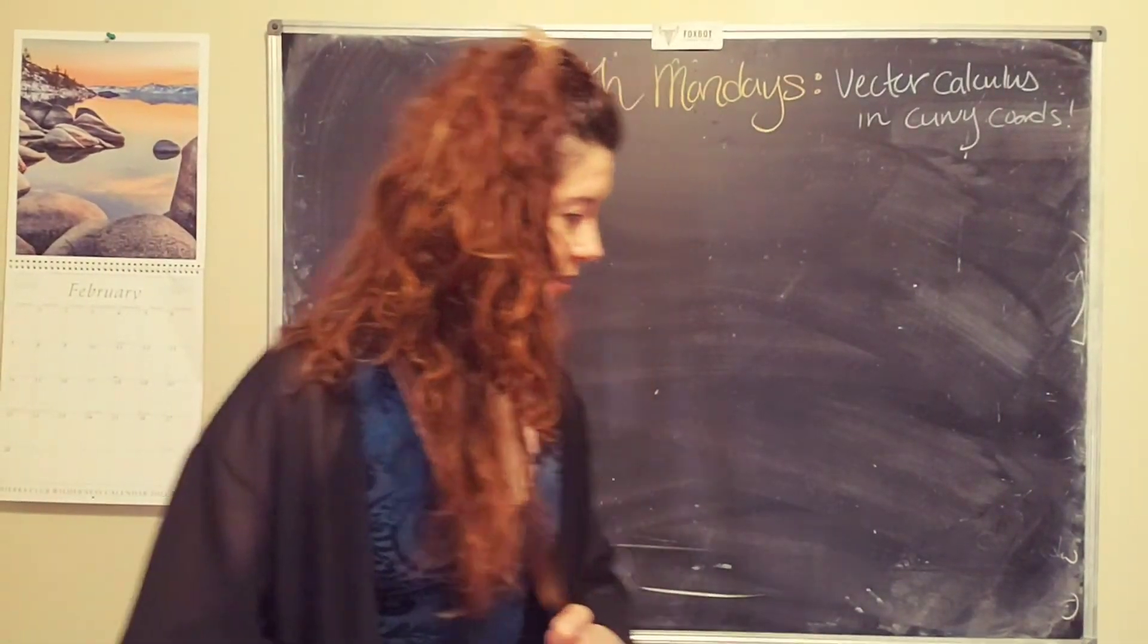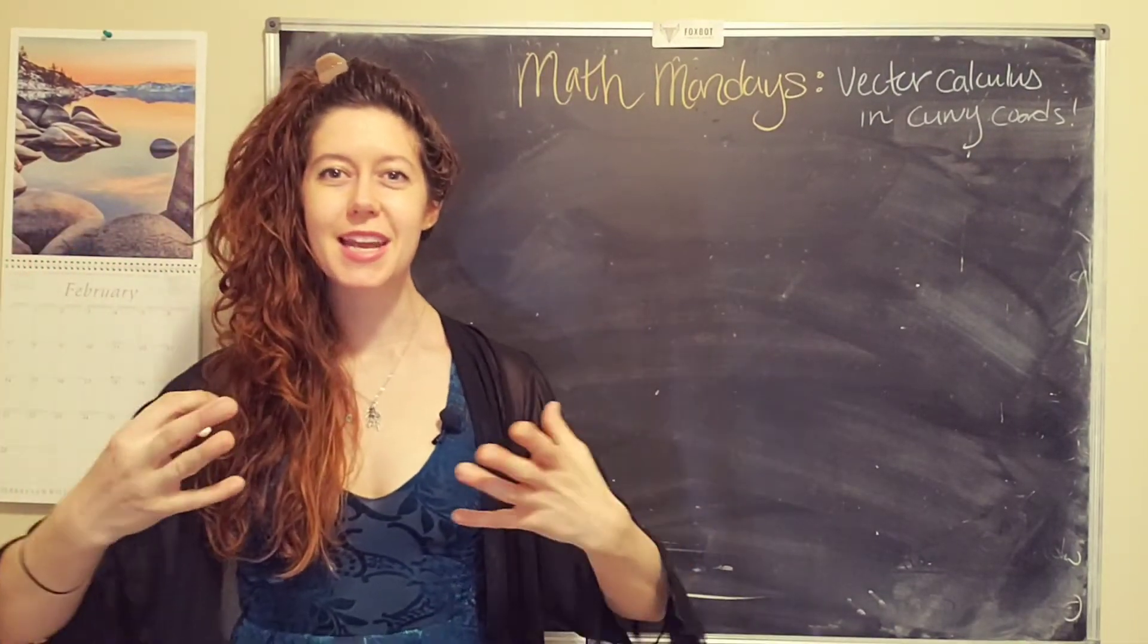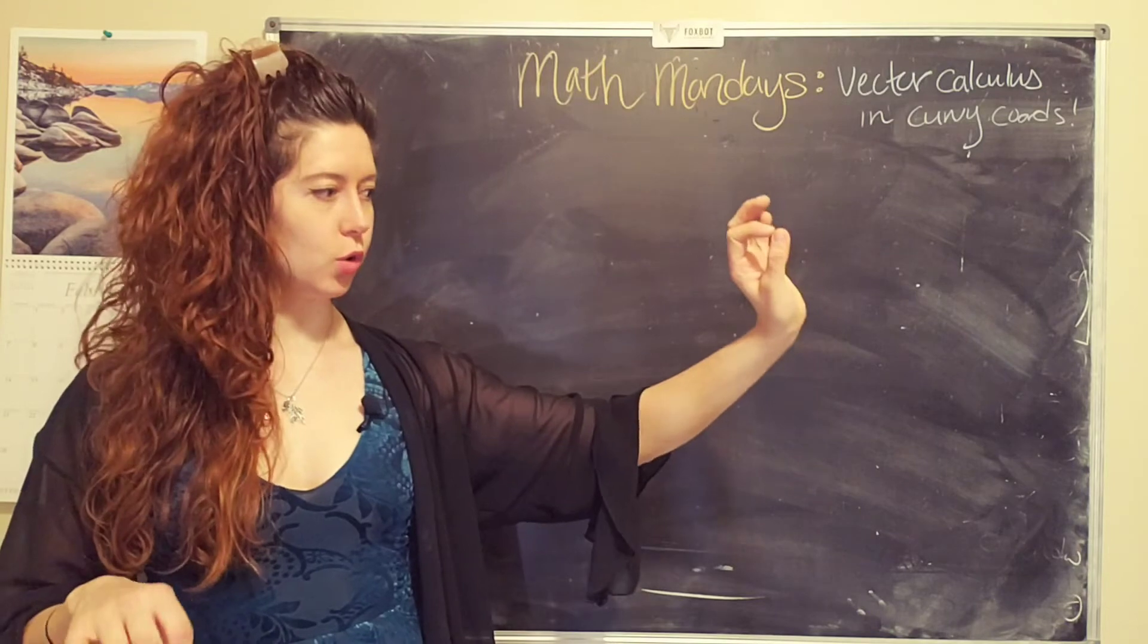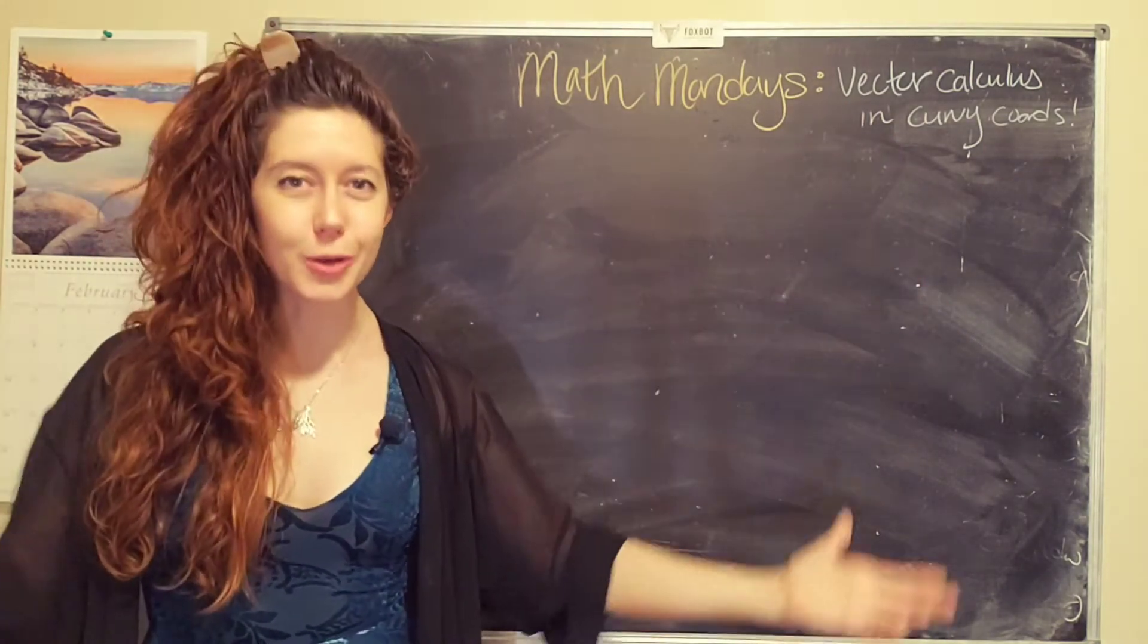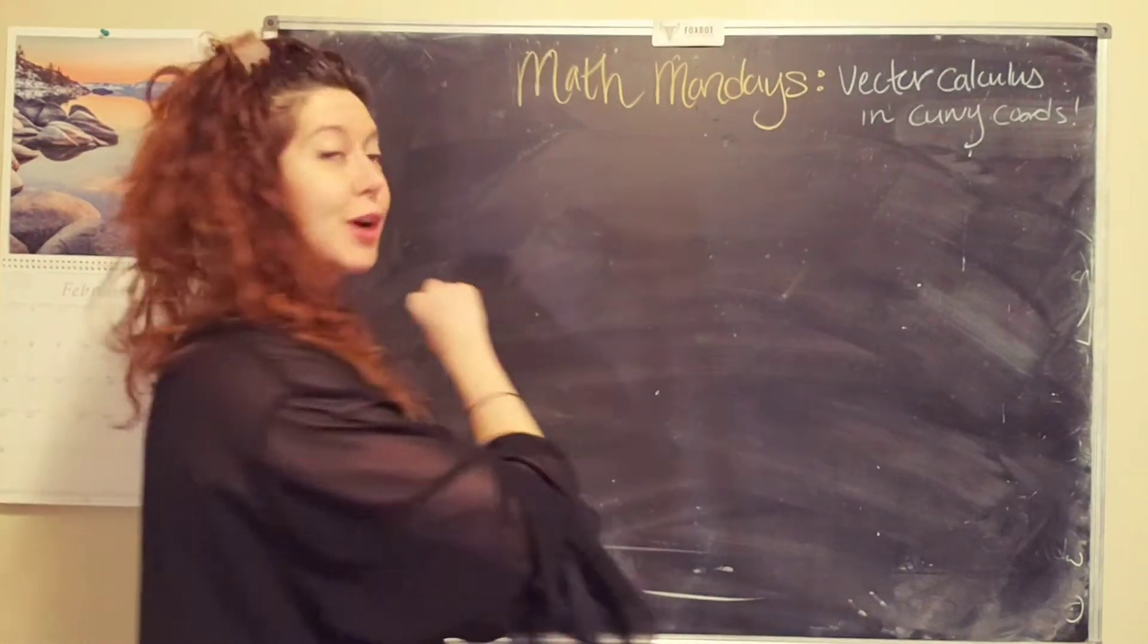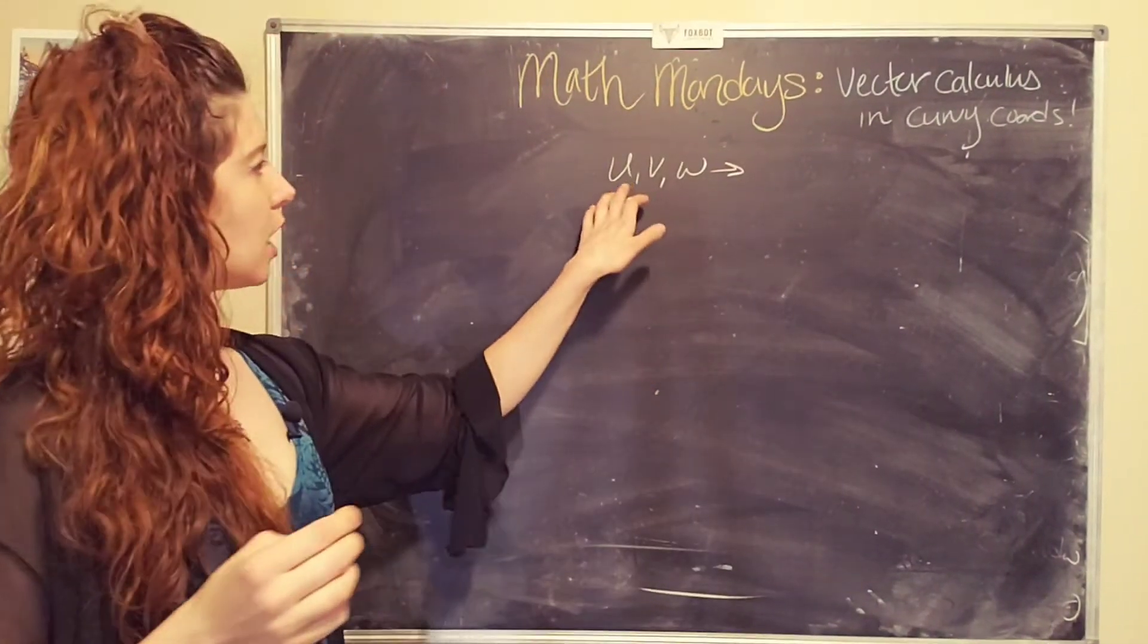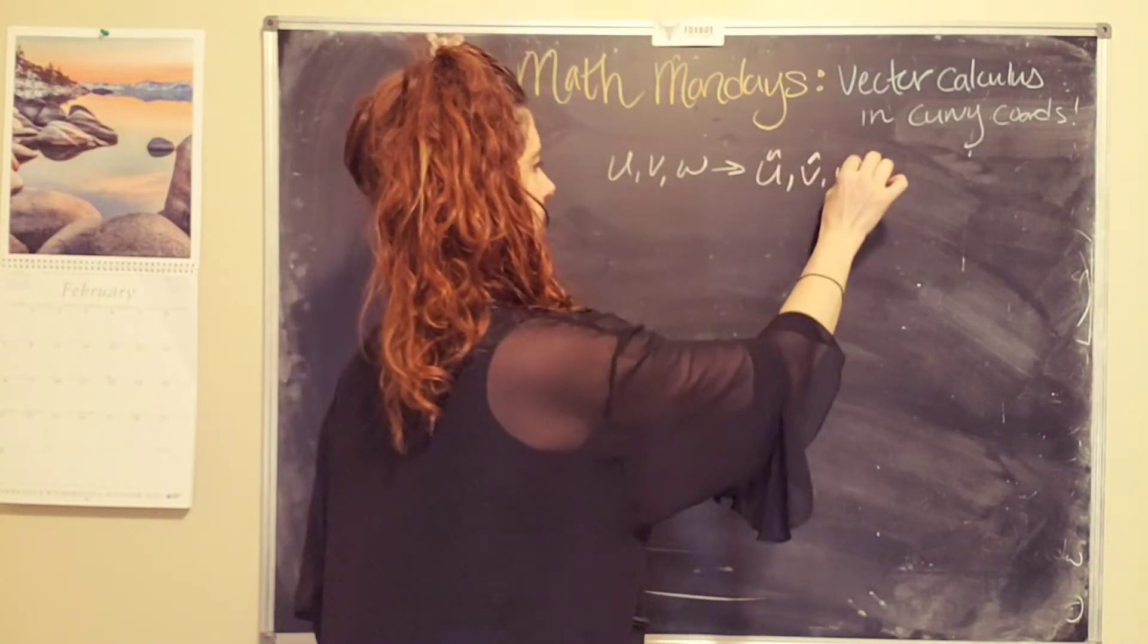So what we're going to do is we are going to create a generic coordinate system. Let's say I want to define an object in space. At least in our universe, that means we need three different coordinates. For our generic version, I'm going to use u, v, and w, which I am stealing from my book. And so for each of these coordinates, they have unit vectors u hat, v hat, and w hat.